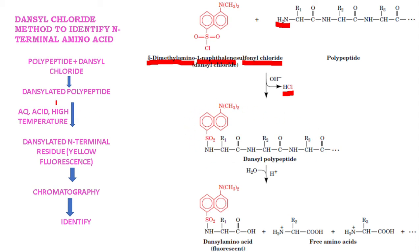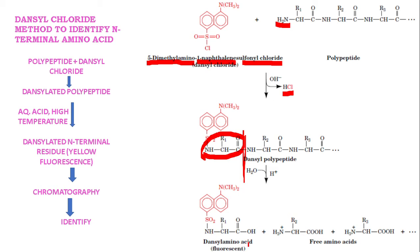This danzylated polypeptide is reacted with aqueous acid at high temperature. What happens? We get the danzylated N-terminal amino acid. Here is the N-terminal amino acid — it is danzylated. So there is a hydrolysis: the danzylated N-terminal amino acid is freed, and the rest of the amino acids are also present.